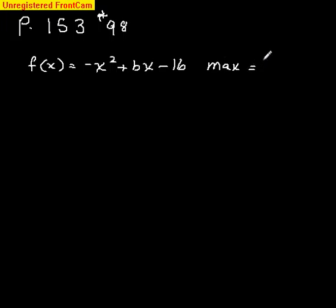Maximum value is 48. So what you have to do, remember I gave you that formula that x equals the maximum value for x is negative b over 2a.